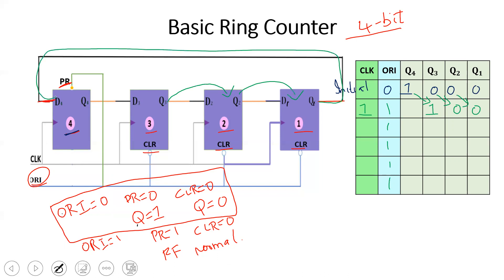Here is D4 — you connect it here to Q1. Q1 is 1 and Q4, Q3, Q2 are 0. On the next clock pulse — the second clock pulse — Q4 gets the value from Q1. Q4 is 0, Q3 is 0, Q2 is 1, Q1 is 0. The data shifts along. Add the clock pulse and repeat.